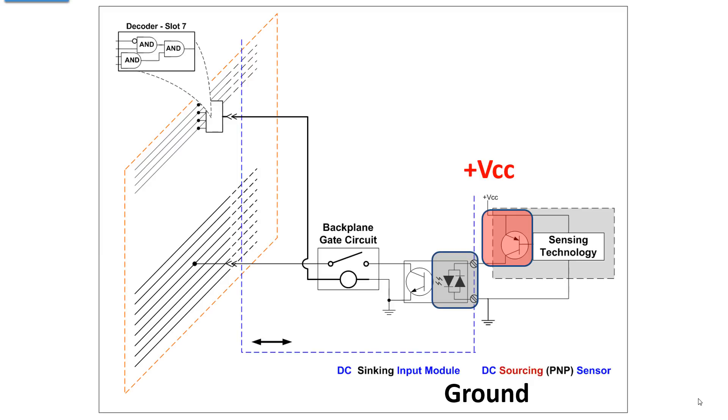Here's the fly in the ointment of this whole sourcing-sinking discussion. Every circuit has a sink and a source. When you are identifying the input module, do you identify it by where its circuit fits in the DC circuit or by what type of a sensor that you apply to it? Is it a sinking module because its input circuit sinks the sensor? Or do you call it a sourcing module because it requires a sourcing sensor?